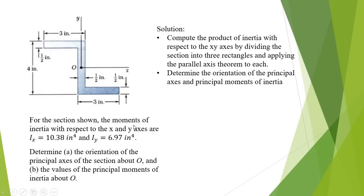For the section shown, the moments of inertia with respect to the X and Y axes are I_X equals 10.38 and I_Y equals 6.97. Determine the orientation of the principal axis of the section about point O and the values of the principal moments of inertia about O. We compute the product of inertia with respect to the XY axis by dividing the section into three rectangles and applying the parallel axis theorem to each.